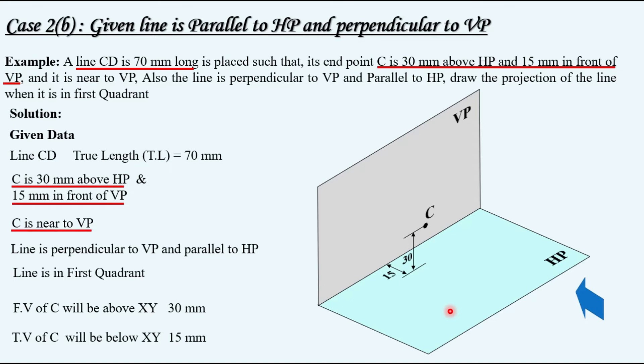Now parallel to HP, the line can be placed in two positions like this. In the second position, the line CD is crossing vertical plane and entering another quadrant.